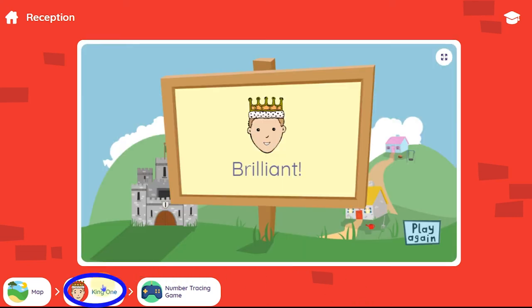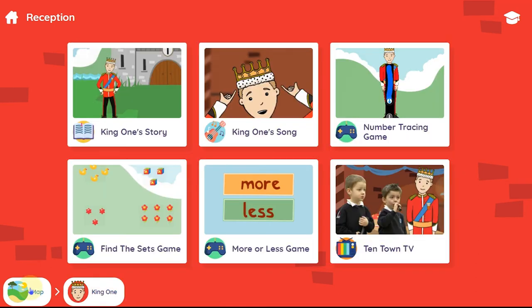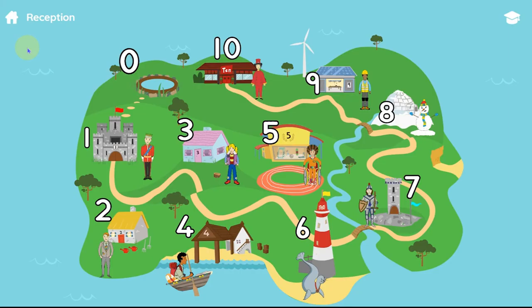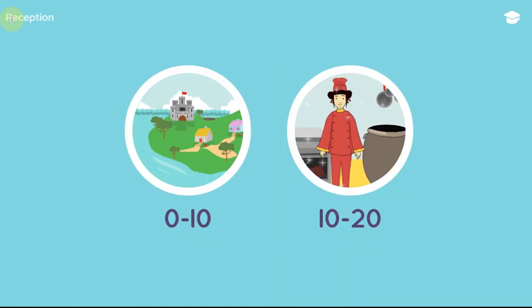Click on the character in the breadcrumb trail to return to their activities, or click on the map to return here. If you have a 0 to 20 pack the home icon takes you back to the number selection page.